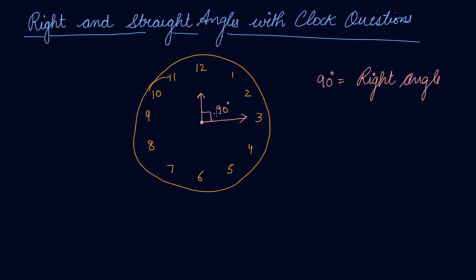So this is a right angle which the clock makes. If we label the lines A, B, C, D — B-D is perpendicular to A-C. You call it perpendicular when your angle makes 90 degrees.